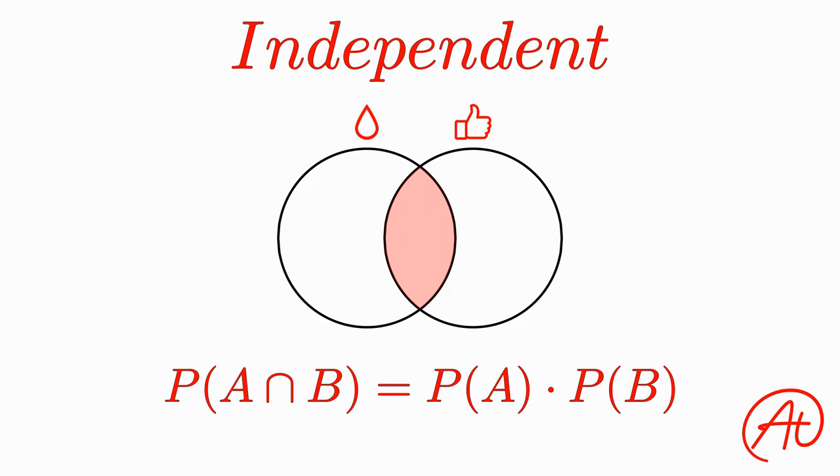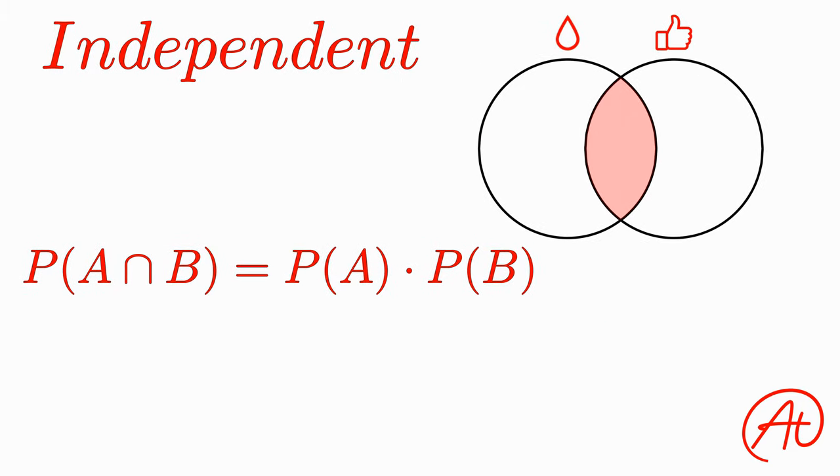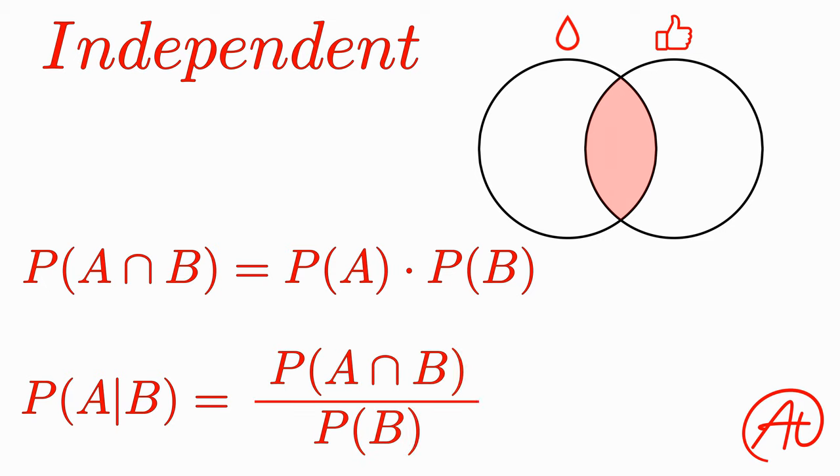To see that, we need to look at the conditional formula that says the probability of A given B is the probability of A and B divided by the probability of B. And if you need a refresher on where this formula comes from, take a peek at our last video for a quick reminder.